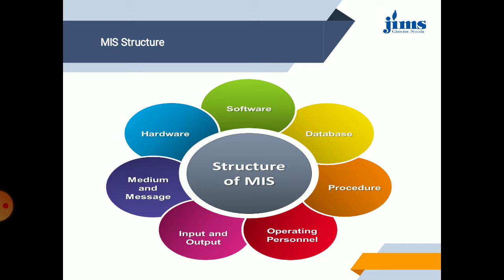The software analyzes past information and gives us information suitable for future prediction. There are many processes helping to develop results. Operating personnel are also part of the MIS structure. Input and output devices are used, as well as medium and message — what type of media and methods are being used. All these things come together to form the MIS structure: hardware, software, database, processors, operating personnel, input and output, medium and messages.